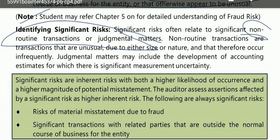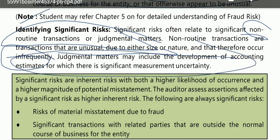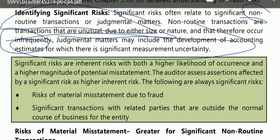Non-routine transactions are transactions that are unusual due to their size or nature and therefore occur infrequently. Judgmental matters may include the development of accounting estimates for which there is significant measurement uncertainty — meaning there is a lot of subjectivity and uncertainty. Significant risks are inherent risks with both a higher likelihood of occurrence and higher magnitude of potential misstatement.